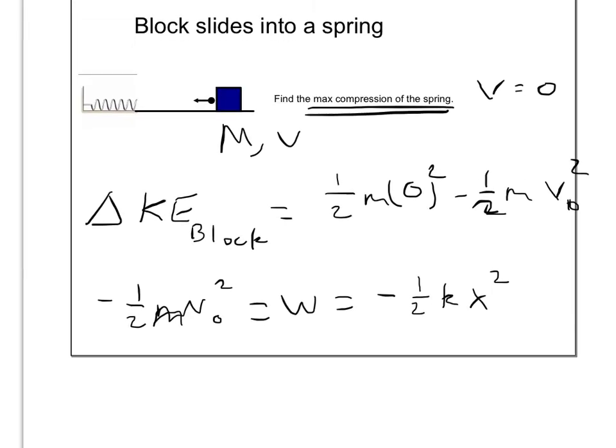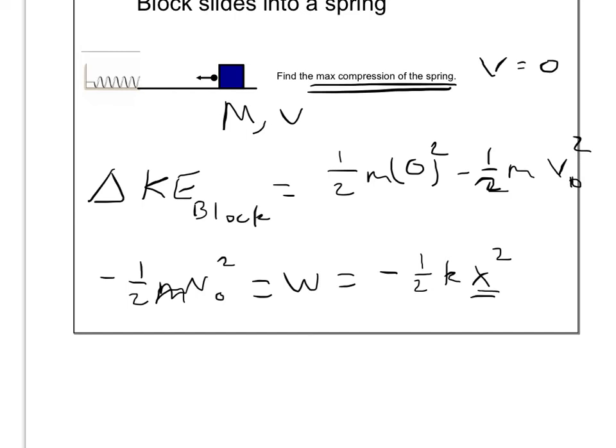So what this allows us to find is the x position of the spring, in other words, how much we compressed it. If we do a little bit of simplifying, we get that x equals m v not squared over k, square rooted.